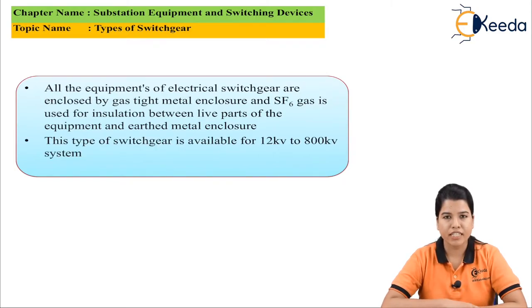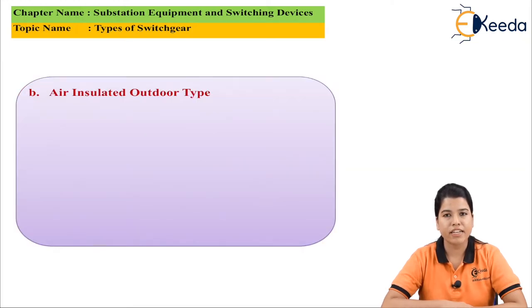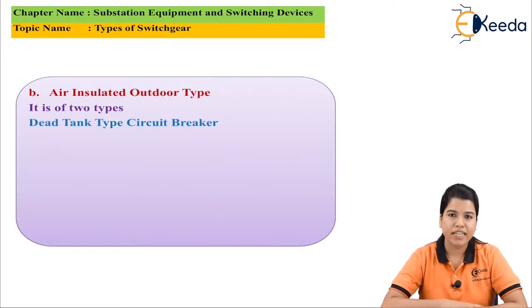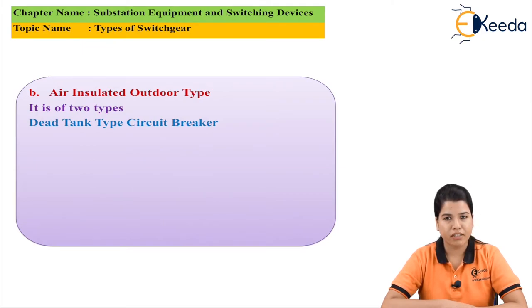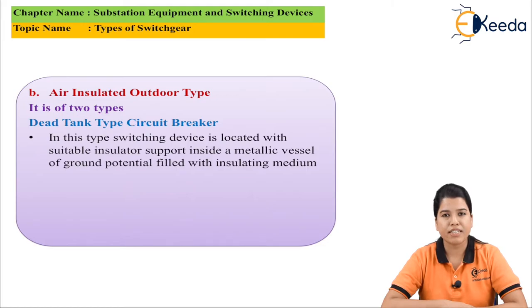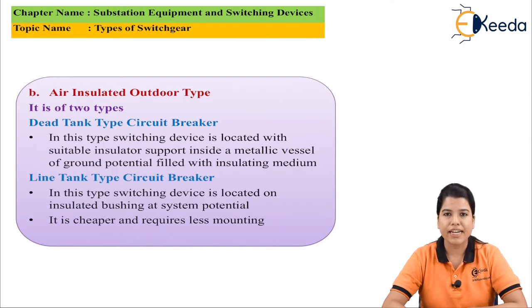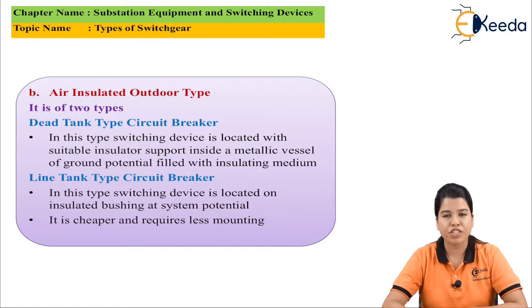This type of switchgear is available from 12 kV to 800 kV. The air insulated outdoor type is again of two types. First is the dead tank type circuit breaker, where the switching device is placed inside a vessel at ground level with an insulating medium. Second is the live tank type circuit breaker, which is cheaper compared to the dead tank type, and in this the switching device is located at an insulated bushing.